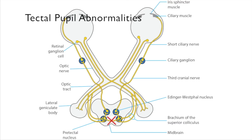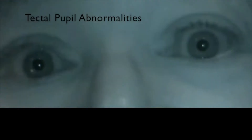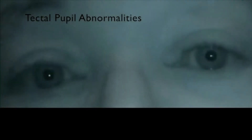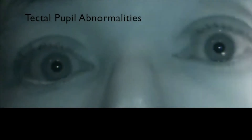Damage to the pre-tectal nuclei in the dorsal midbrain may cause large pupils, anisocoria, and impaired pupil constriction to light in both eyes. Pupils that behave this way are called tectal pupils.